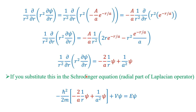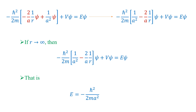Substituting back into the Schrödinger equation and rearranging with psi factored out: minus h-cross²/2m times [1/a² - 2/(ar)]·psi plus V·psi equals E·psi. According to our problem, as r tends to infinity, V equals 0. When r tends to infinity, the 2/(ar) term goes to 0, and V goes to 0 as well, so those terms cancel.